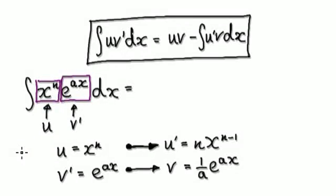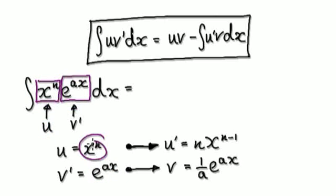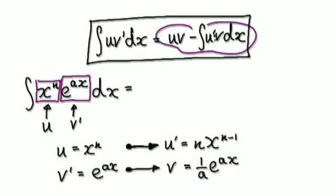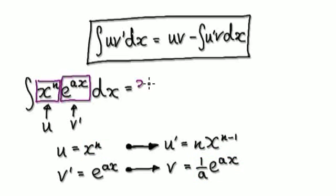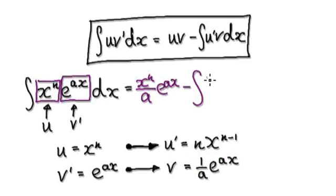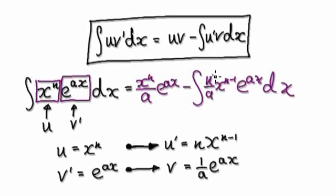To do this, use integration by parts to obtain the reduction formula. Set x^N to be your U, and set e^(Ax) to be your V prime. If U equals x^N, then differentiate it — U prime equals N·x^(N-1). Integrate V prime, which gives you V = e^(Ax)/A. Now blindly follow the formula: get U times V, which gives you x^N over A times e^(Ax). And then you've got your minus integral term with e^(Ax) dx.